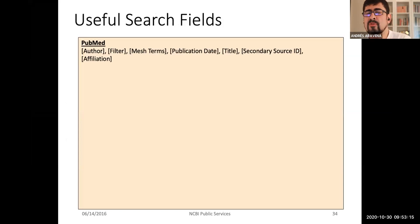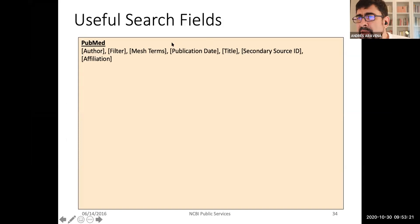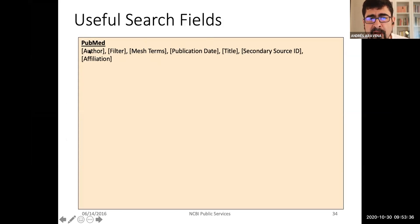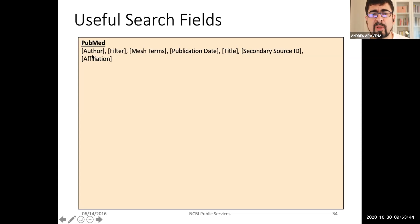They are essentially showing the same things — some of the fields that are useful. If you are looking in PubMed, the useful fields are author, filter, MeSH term (which we'll talk about in a minute), and publication date — that is super important. For example, if you want to know which papers have been published by Istanbul University in the last year, you look for affiliation and publication date.